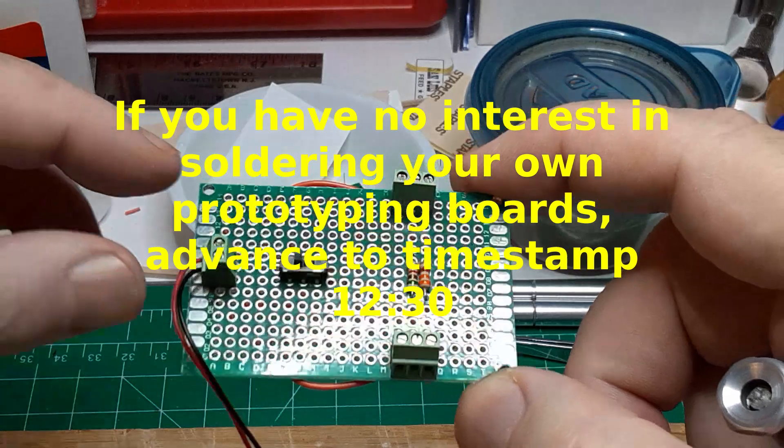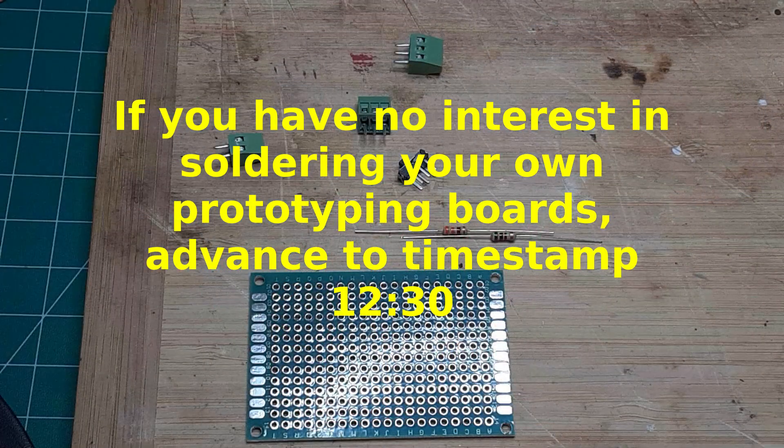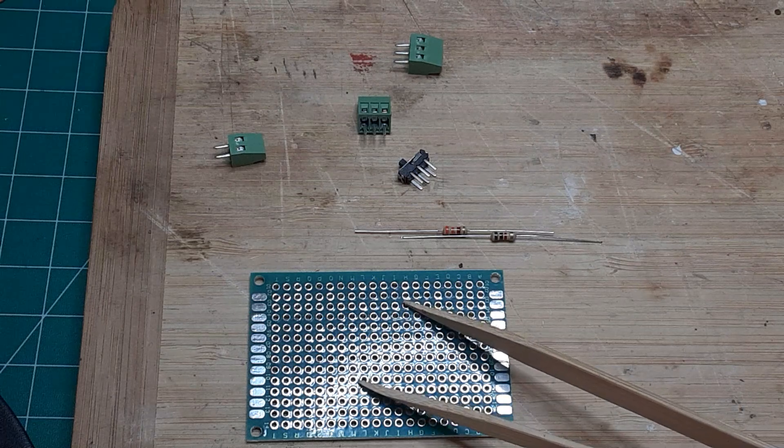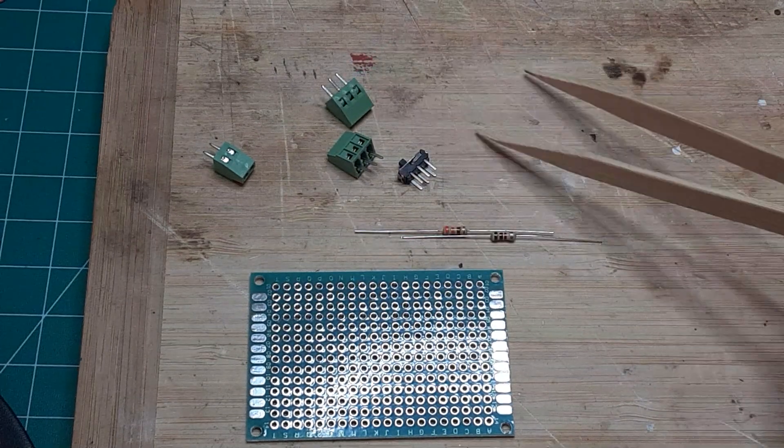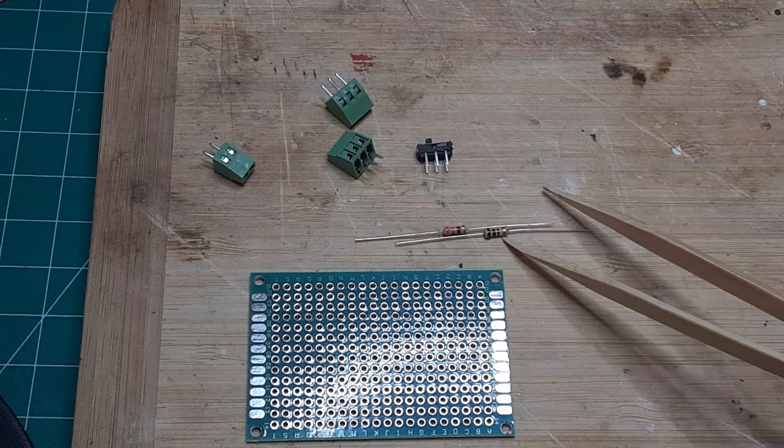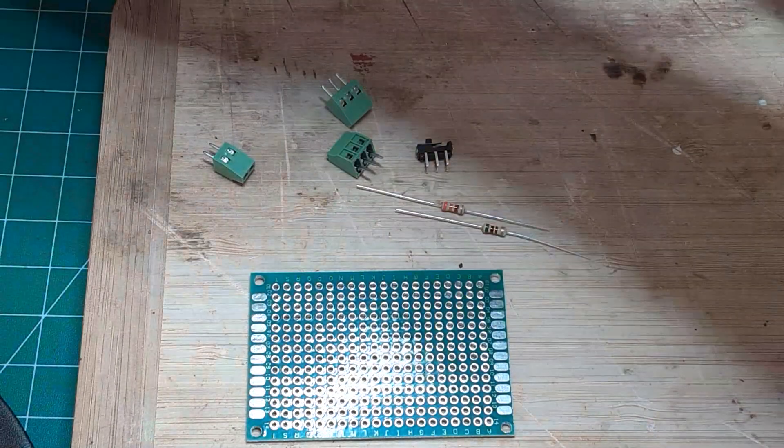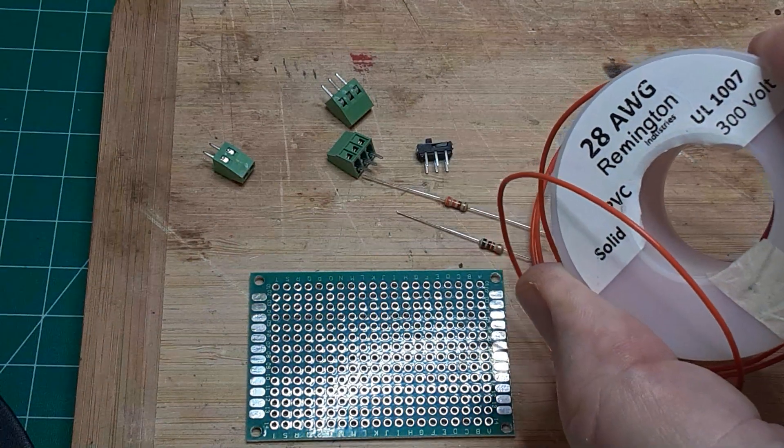With the circuit designed, it's time to build the prototype circuit board. To build the prototype board, you'll need a 4x6 cm prototype PCB board, one 2-pin screw terminal connector, two 3-pin terminal connectors, one DPDT switch, two resistors, and a supply of solid 28-gauge hookup wire. Stranded wire should be avoided.